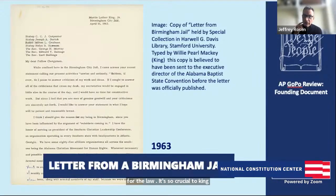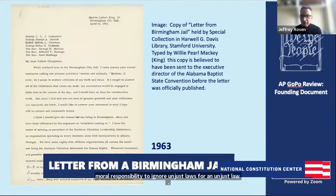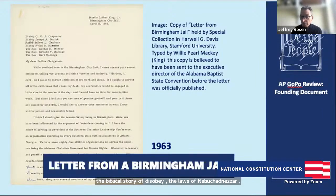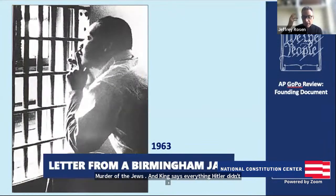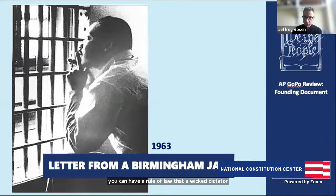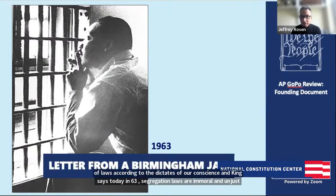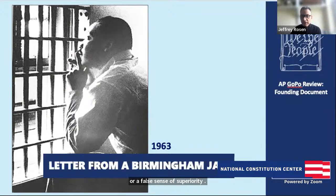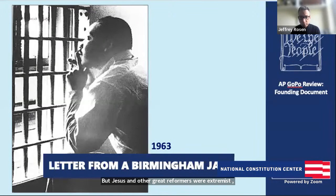It's crucial to King, as to Augustine and Aquinas, that you have a moral responsibility to ignore unjust laws — for an unjust law is no law at all. He cites the biblical story of disobeying the laws of Nebuchadnezzar, but also Hitler's Germany and the genocidal murder of the Jews. King says everything Hitler did in Nazi Germany was technically legal — you can have a rule of law that a wicked dictator bends to his own will. But we have an independent obligation to judge the morality of laws according to our conscience. King says that segregation laws are immoral and unjust because segregation distorts the soul and damages the personality. The question is not whether we will be extremists, but what kind — will we be extremists for hate or for love?